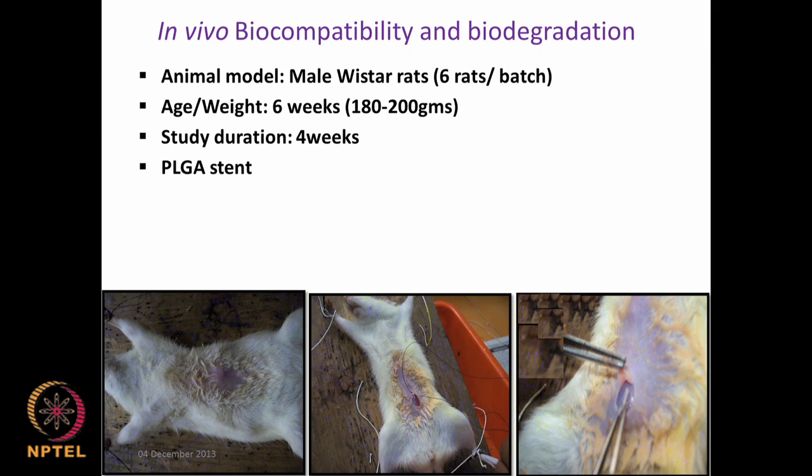We had done some experiments - we were looking at in vivo biocompatibility and biodegradation of a polymer called poly lactic-co-glycolic acid (PLGA), which is supposed to be an alternate use in ureteral stents - currently polyurethane is used. We want to look at this PLGA in an animal model using male Wistar rats.